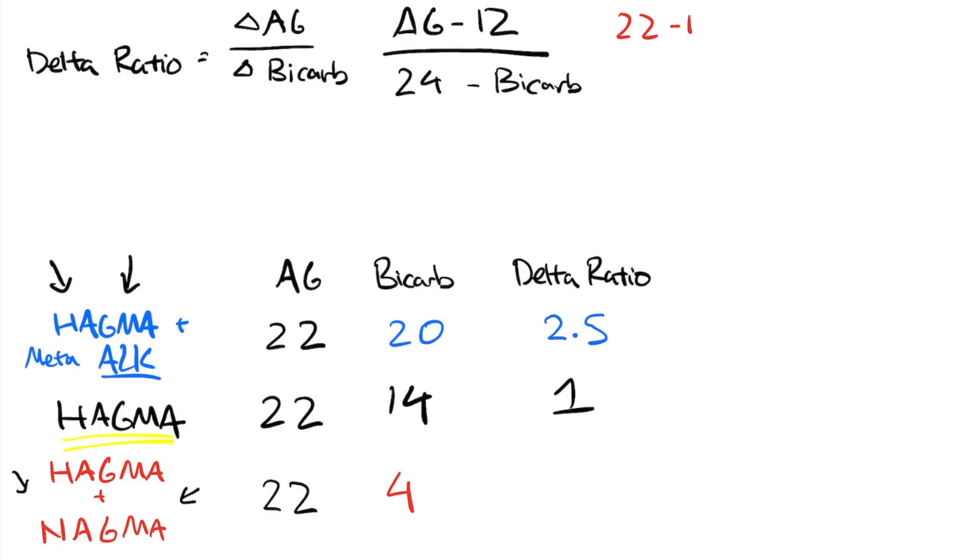22 minus 12 over 24 minus 4. Now, we have 10 over 20 or 0.5. So now you see a high delta ratio suggests a secondary metabolic alkalosis and a low one suggests a secondary acidotic process.